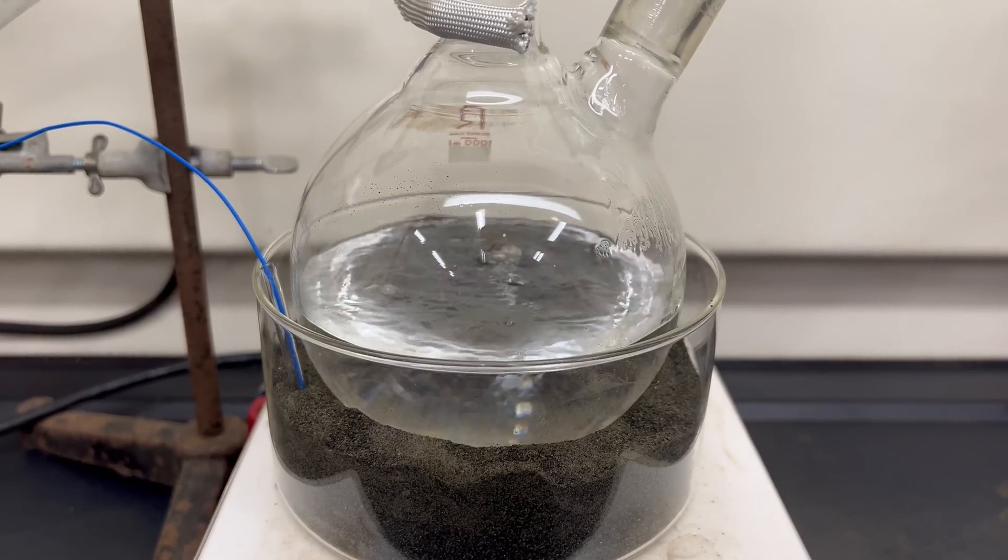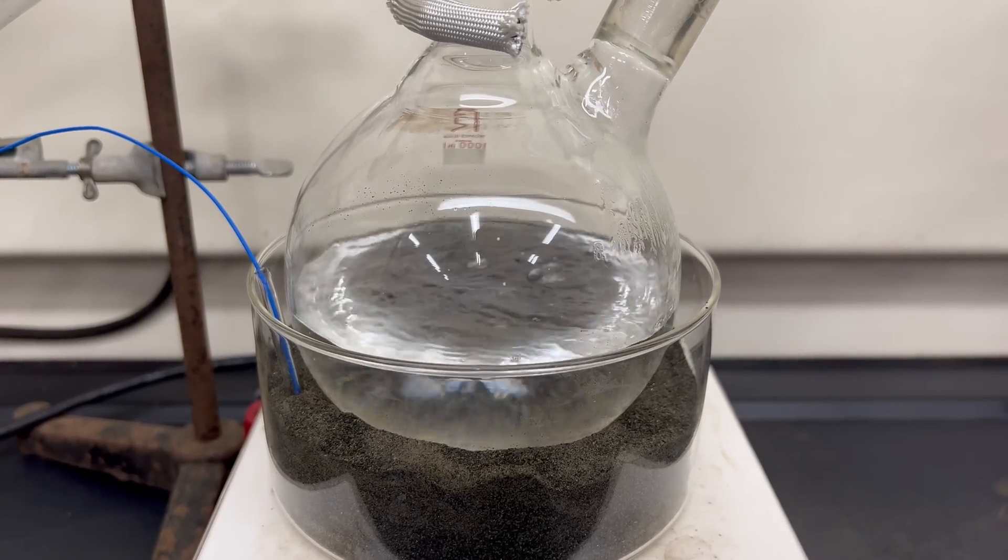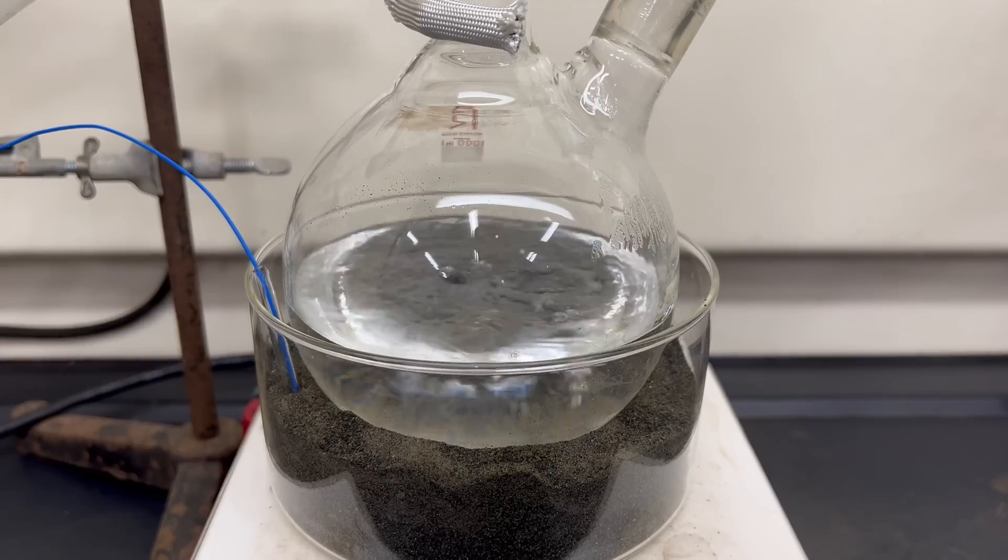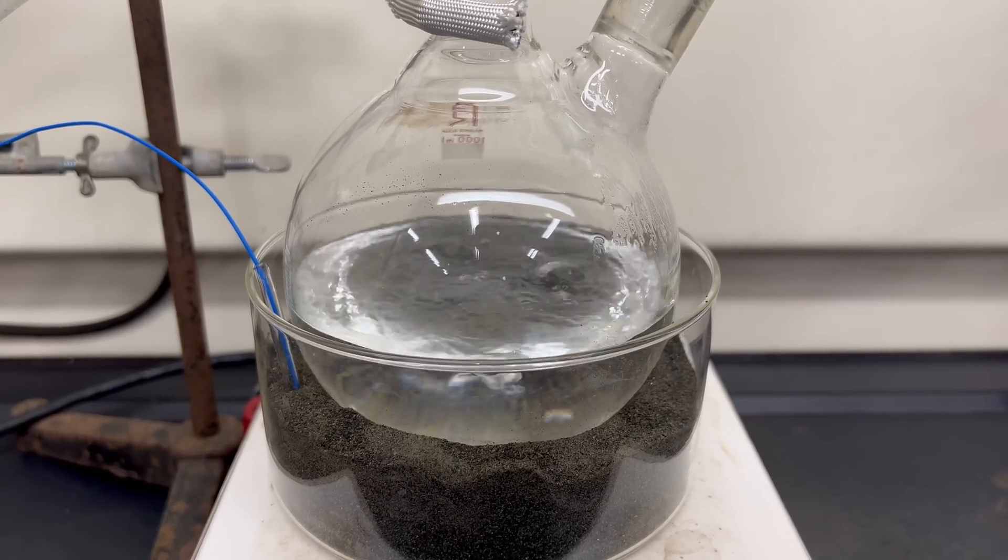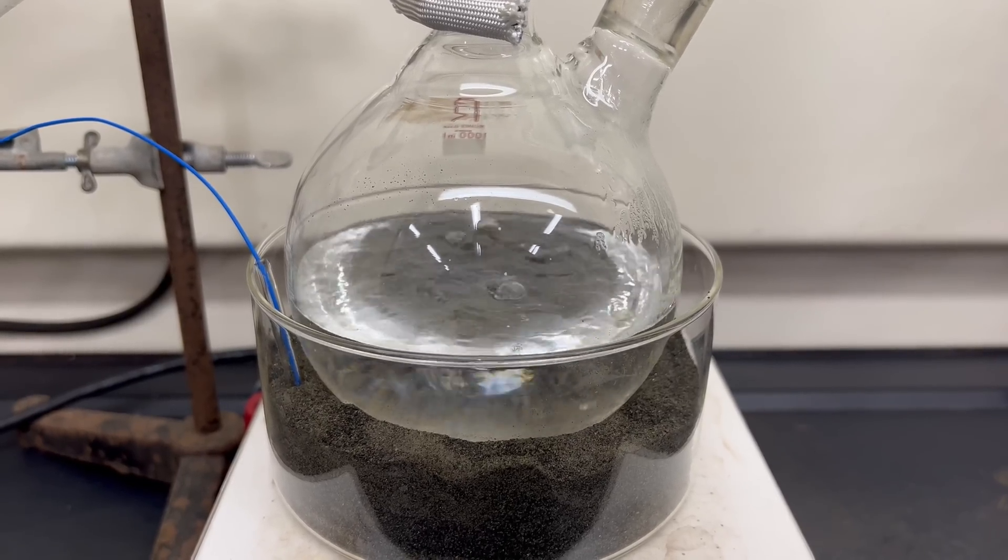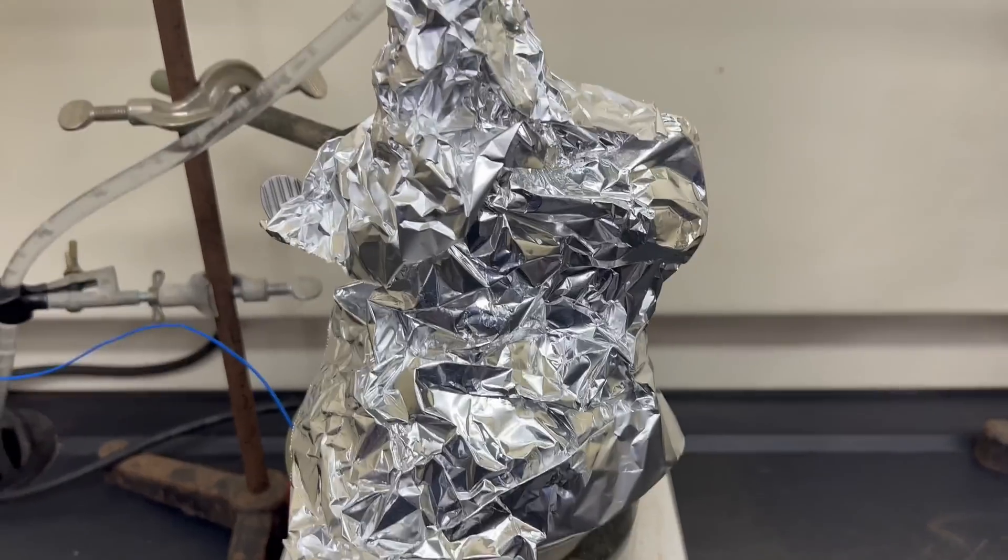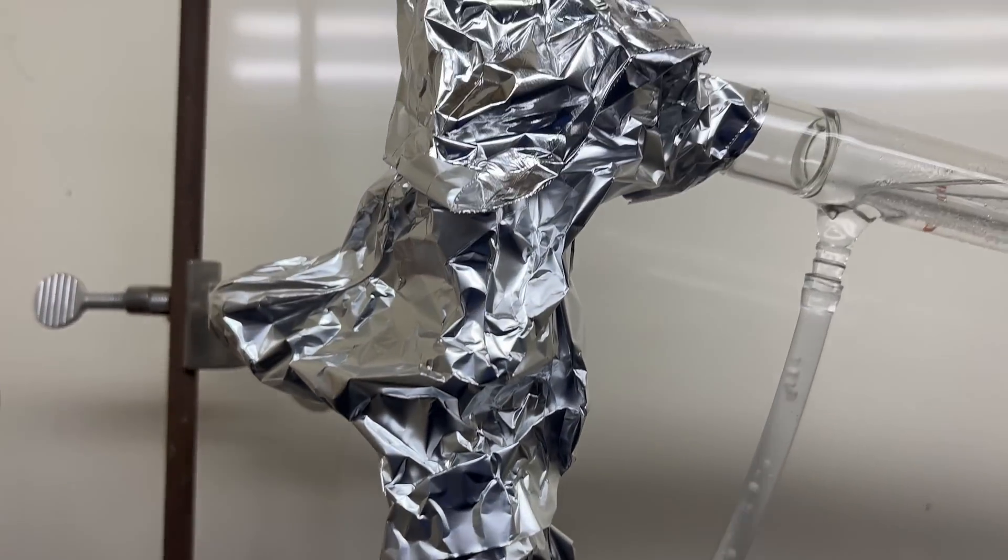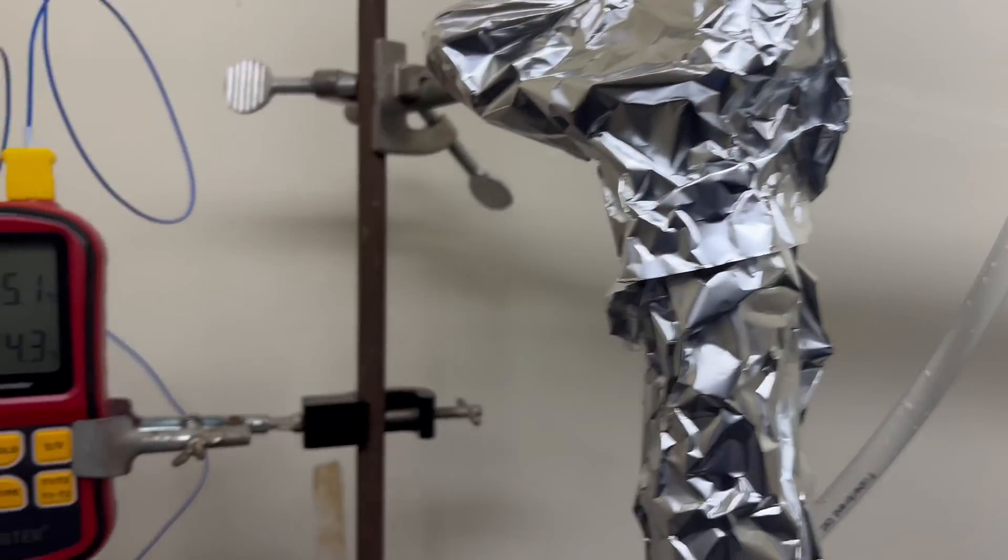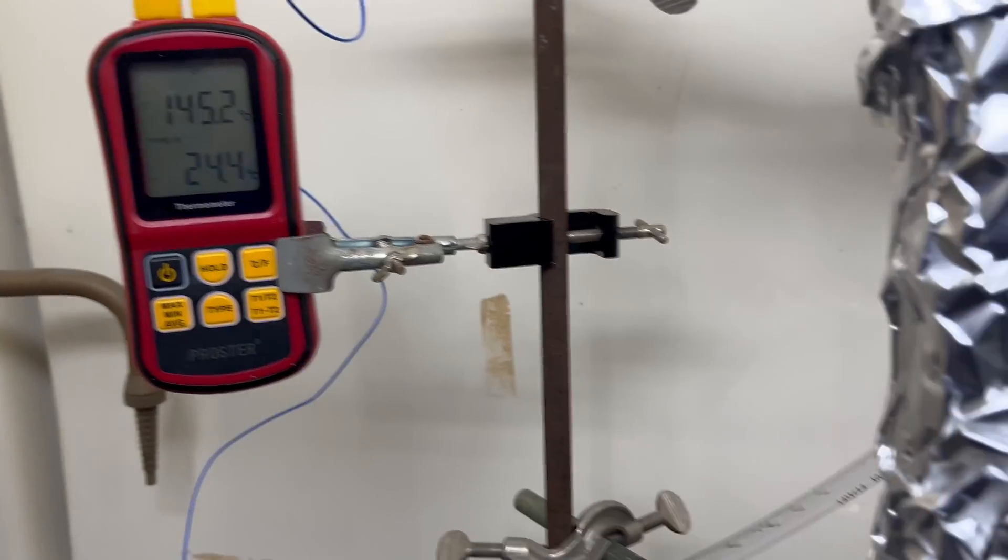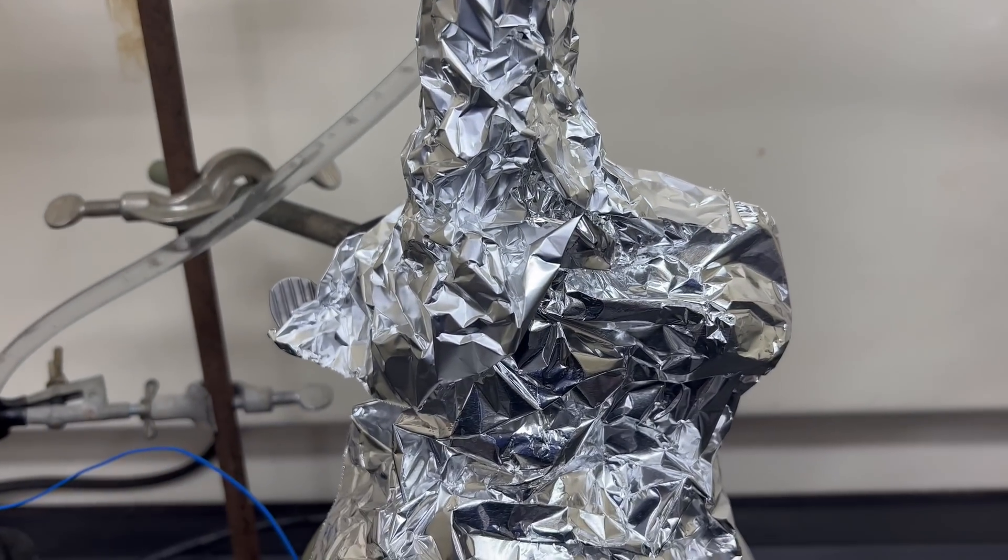Fractional columns suffer from cooling down too quickly. We can avoid that by wrapping them with aluminum foil to keep the heat in. So that the foil keeps the heat in and allows the vapor to reach the top, where it is then condensed.